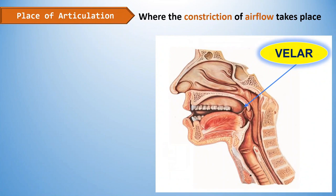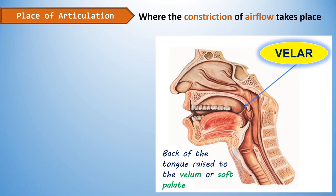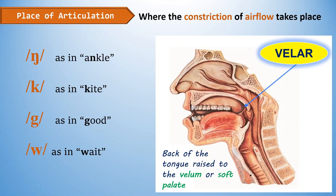Next is velar. Just behind the hard palate is the velum, or soft palate. Velar sounds are produced when you raise the back of your tongue to the velum to block or restrict airflow. English has the following velar consonants: NG as in 'ankle,' K as in 'kite,' G as in 'good,' and W as in 'weight.'